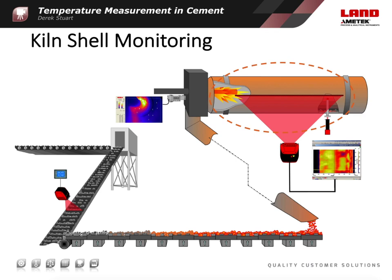Sudden mechanical damage is also possible, especially if the kiln shell distorts because of uneven rotation. No matter what the underlying cause is, deteriorating refractory leads to an increase in kiln shell temperature. Because of this, measuring the shell temperature allows the operator to monitor the long term changes in the refractory and to detect loss or damage to individual refractory bricks.